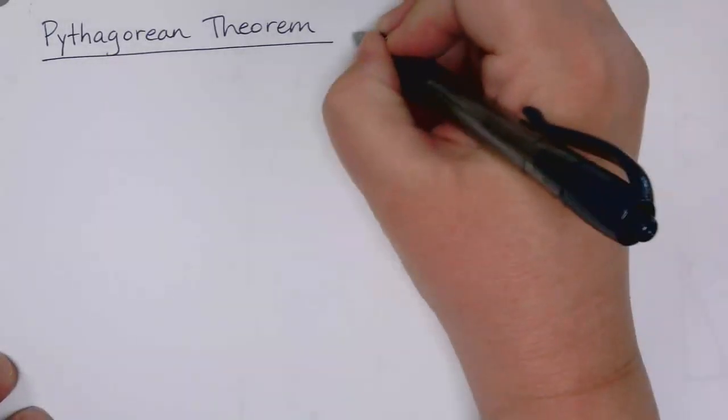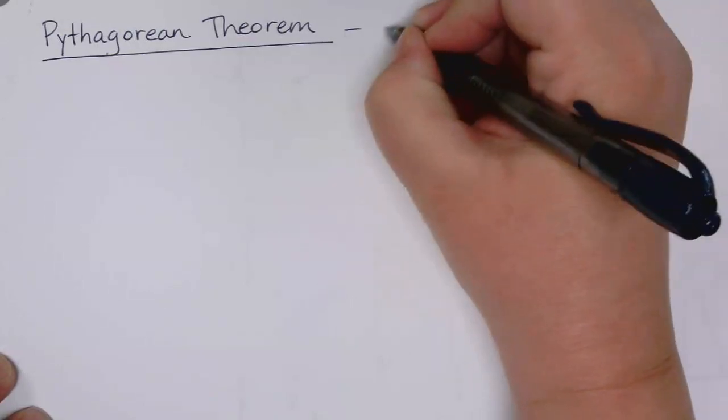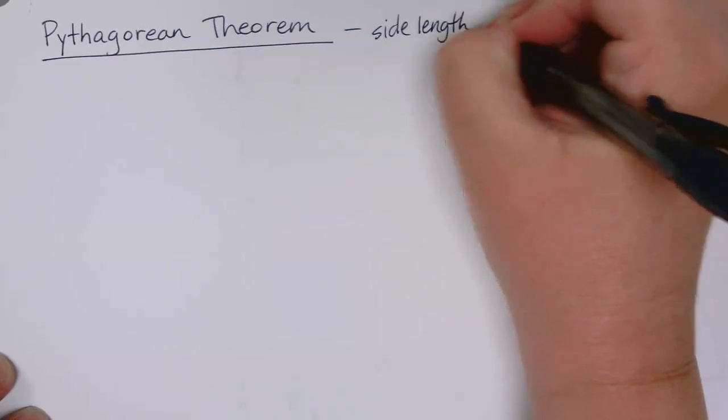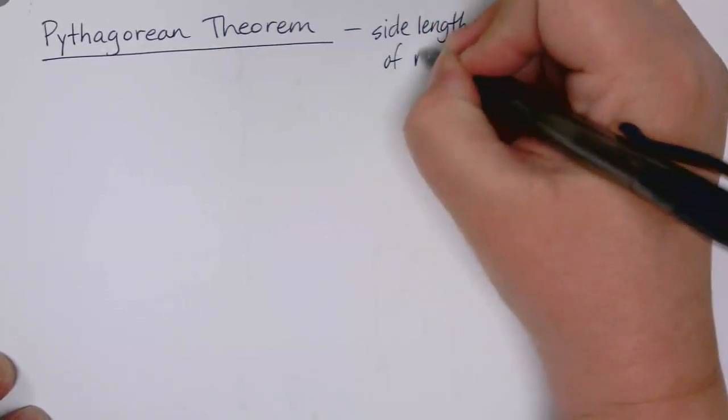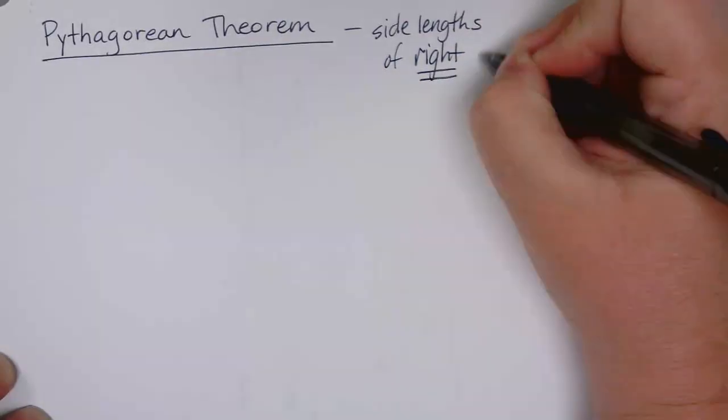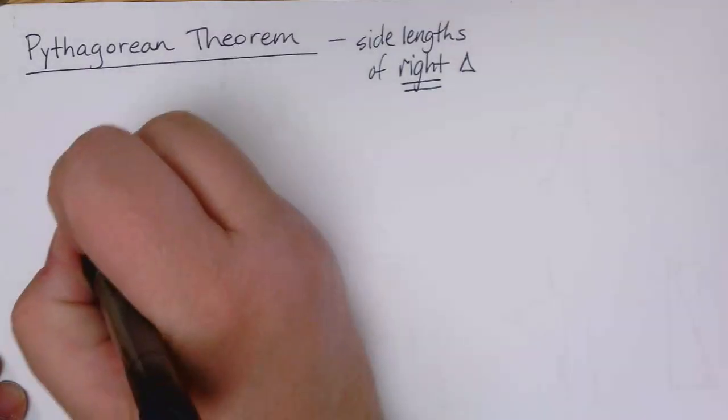So first of all, the Pythagorean Theorem is something that talks about the side lengths, it's a relationship between the side lengths of a right triangle. It only works for right triangles, so we only use the Pythagorean Theorem when we're talking about right triangles.